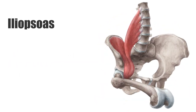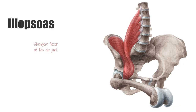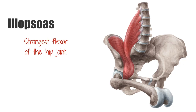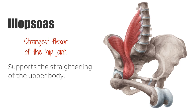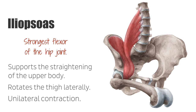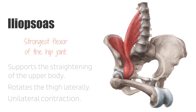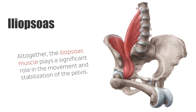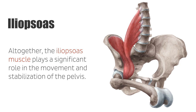The iliopsoas muscle is the strongest flexor of the hip joint, which makes it an important muscle for walking. In the supine position, it decisively supports the straightening of the upper body, for example during sit-ups. Furthermore, it rotates the thigh laterally. A unilateral contraction leads to a lateral flexion of the lumbar vertebral column. Altogether, the iliopsoas muscle plays a significant role in the movement and stabilization of the pelvis.